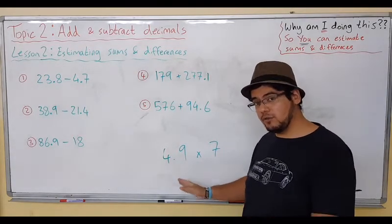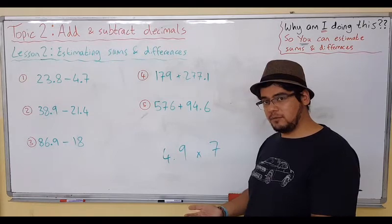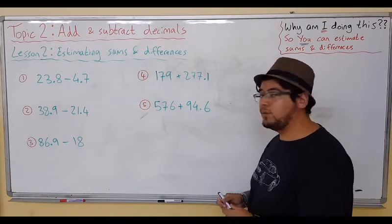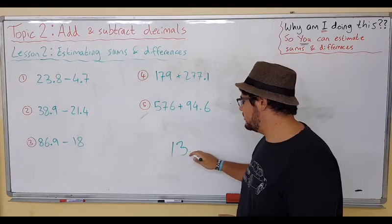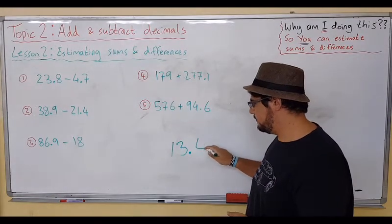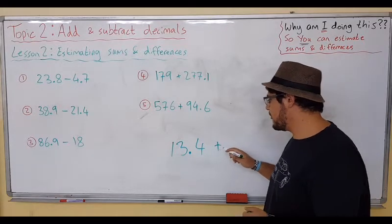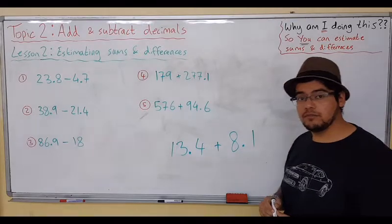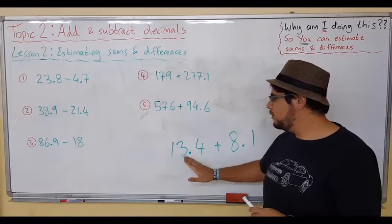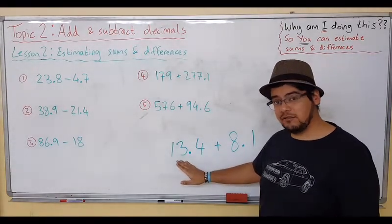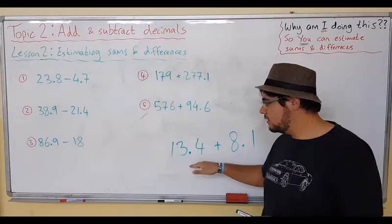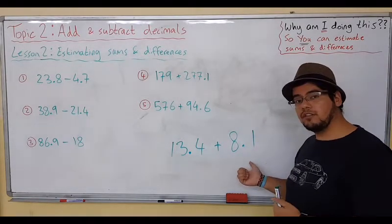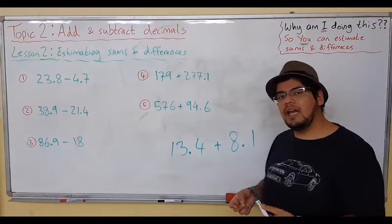Now let's say we have 13.4 plus 8.1. We know we can change this to 13—the 4 rounds down—and 8.1 you can change to 8. Then it should be quick enough to say 13 plus 8 equals 21.